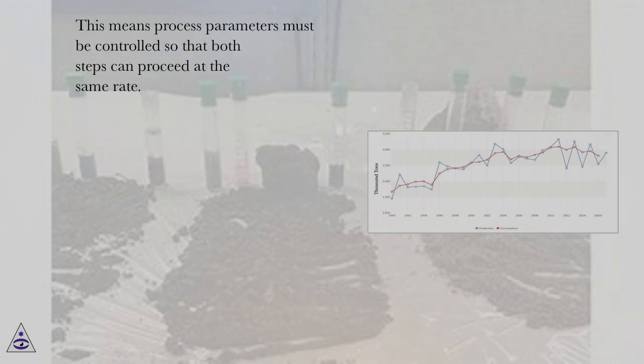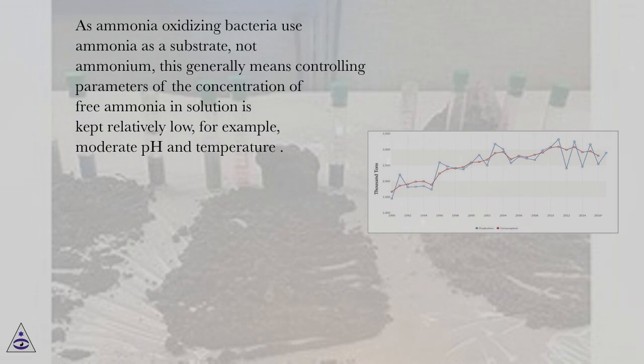This means process parameters must be controlled so that both steps can proceed at the same rate. As ammonia-oxidizing bacteria use ammonia as a substrate, not ammonium, this generally means controlling parameters so the concentration of free ammonia in solution is kept relatively low, for example, moderate pH and temperature.